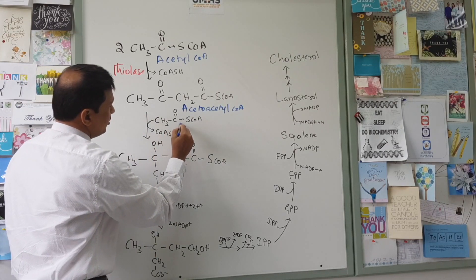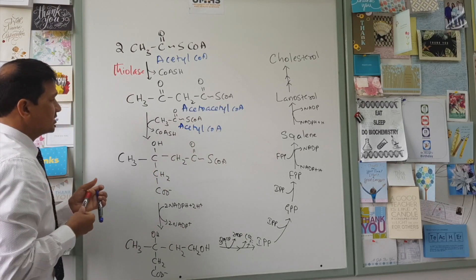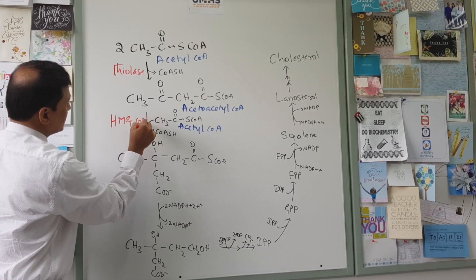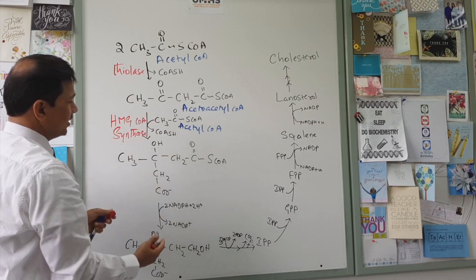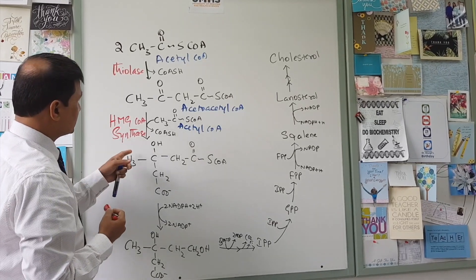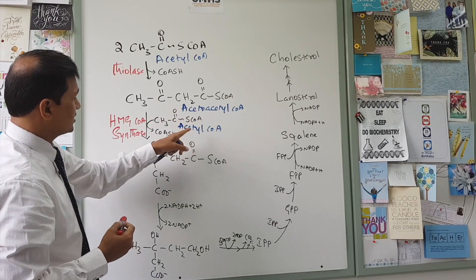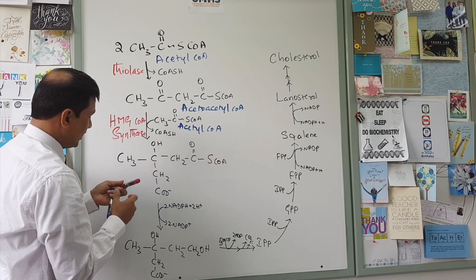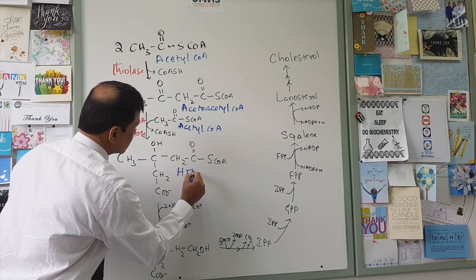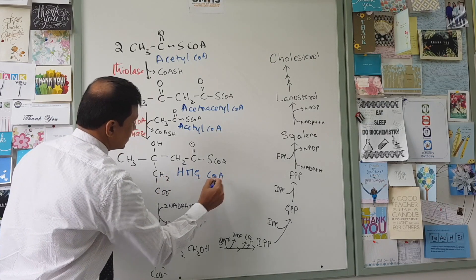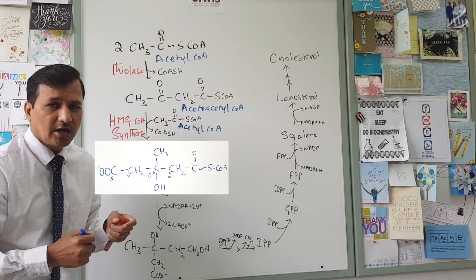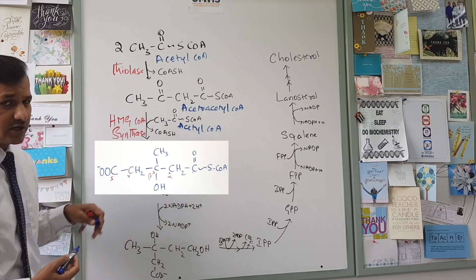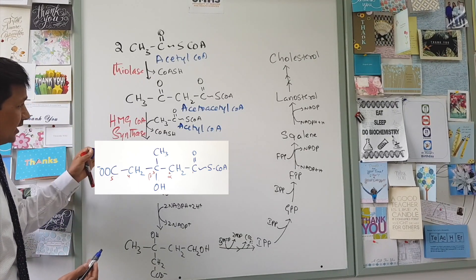This acetoacetyl-CoA molecule then condenses with one more acetyl-CoA molecule. The condensation is performed by an enzyme called HMG-CoA synthase, which is active in the cytoplasm. HMG-CoA synthase condenses acetoacetyl-CoA with acetyl-CoA, releases CoA, and produces HMG-CoA — that is, 3-hydroxy-3-methylglutaryl-CoA.